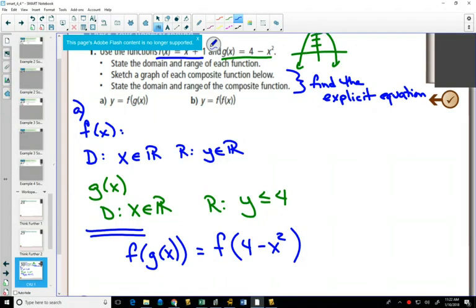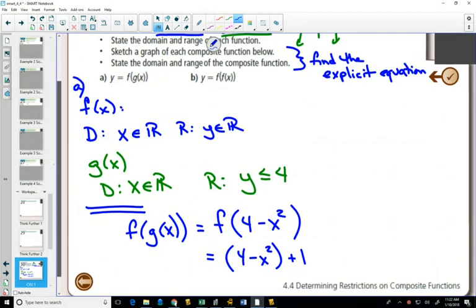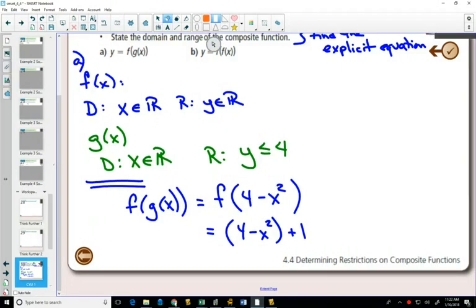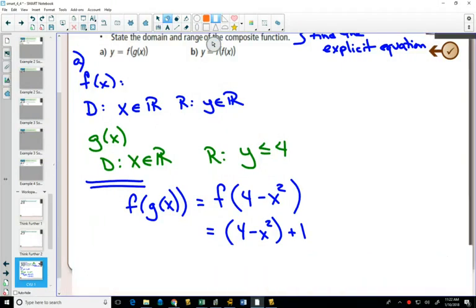And so, now we're putting a 4 minus x squared into the function of f. What does the function of f do? It says whatever you put in, add 1. So, if I put in this, I need to add 1 to it. And simplifying that equation will give me negative x squared plus 5.